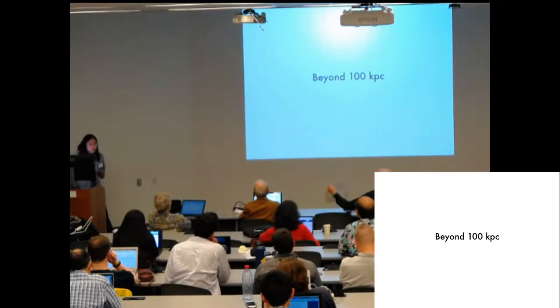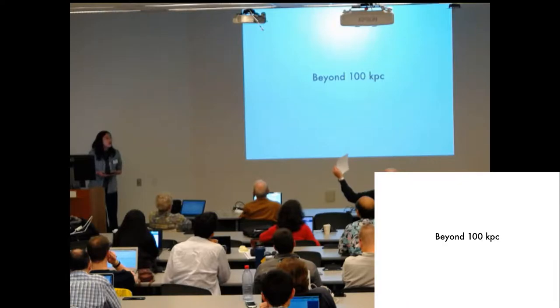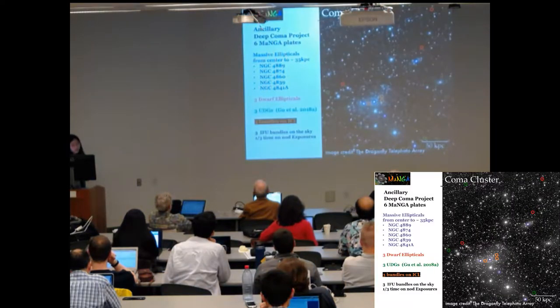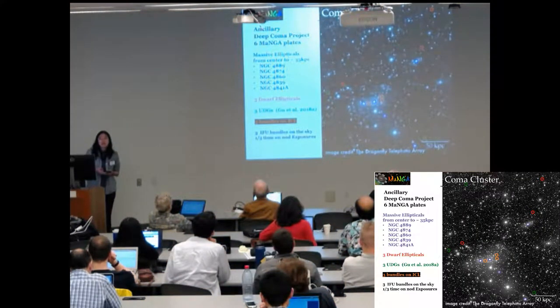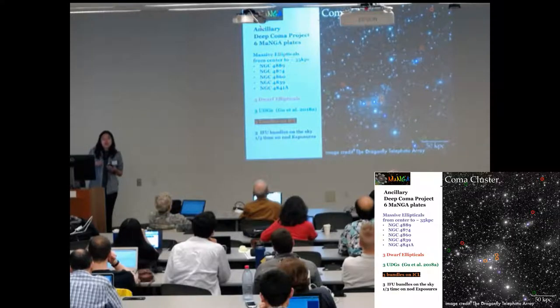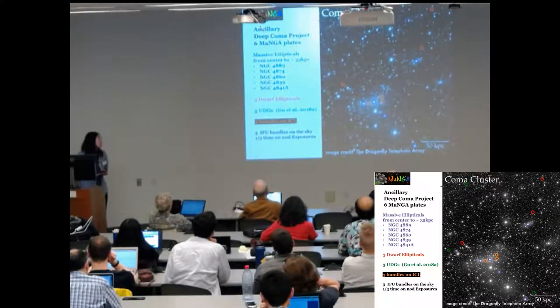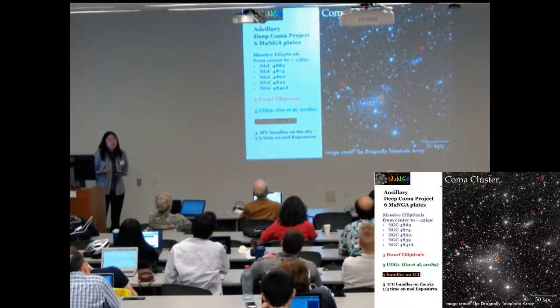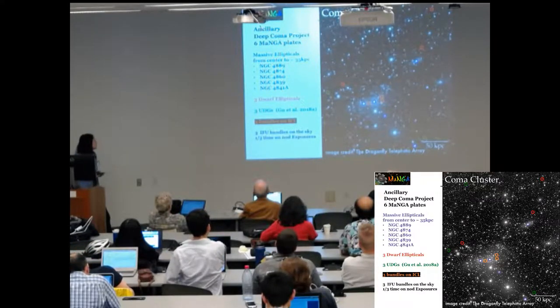Next, I'm going to switch to another object, the Coma cluster. I'm going to show the stellar population beyond 100 kiloparsecs. We used data from the MaNGA survey. This was already very well introduced in Kevin's talk yesterday.